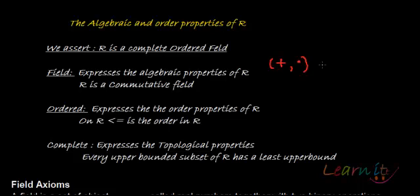Completeness is expressed by the topological properties. The topological properties as in what I mean to say is the existence of supremum. Now every upper bounded set is supposed to have a least upper bound. That's a topological property and that's one property of R which we will be looking at later.